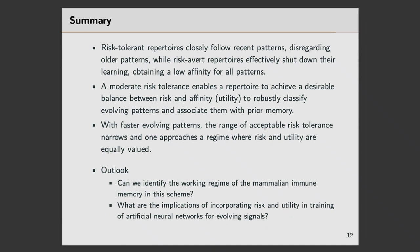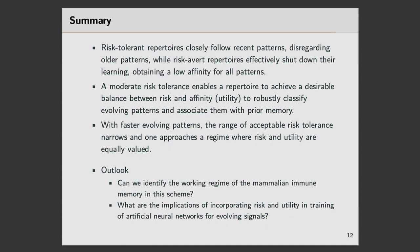A moderate risk tolerance allows getting the best of both worlds. This balance depends on the mutation rate: if the evolution rate of patterns increases, the range of tolerance narrows. One open question is whether we can identify a working regime relevant to immune memory in this framework. Another direction is whether this idea can be incorporated into evolving artificial networks.